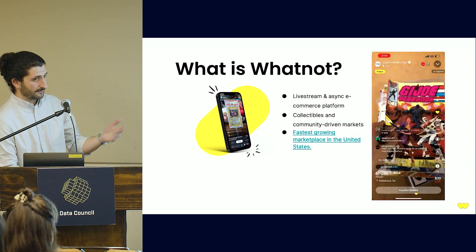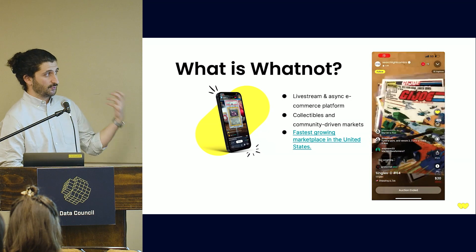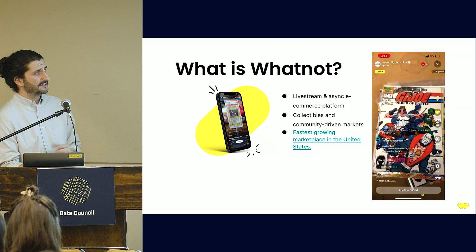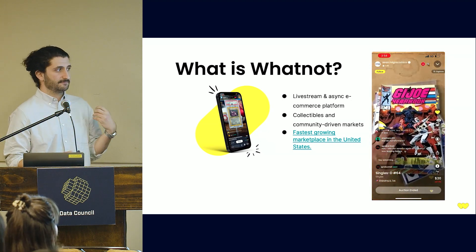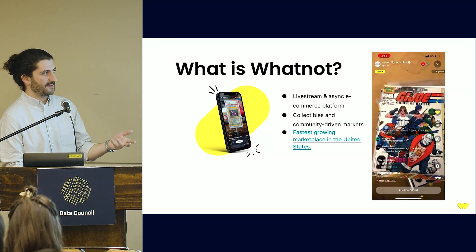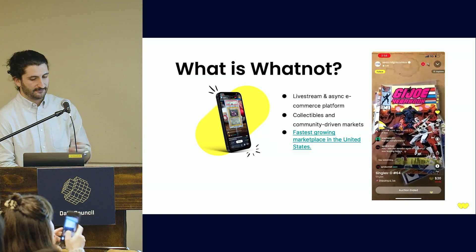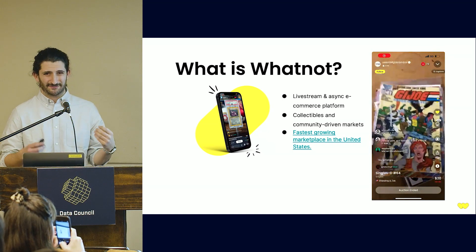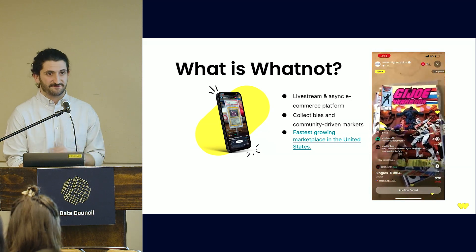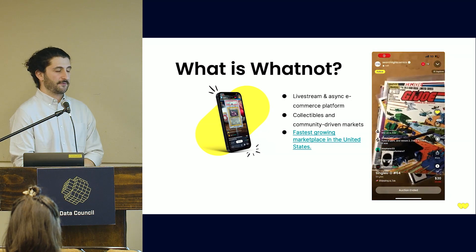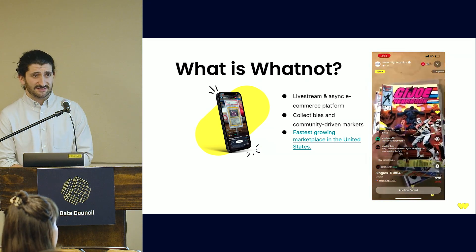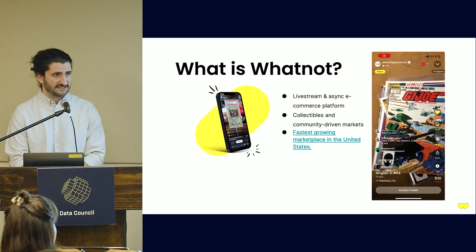The way it works is you download our app, you go join a live stream, there will be a seller who is broadcasting live, and they're selling something. You as a user can buy whatever it is they're selling, usually via an auction. We typically sell in collectible and community-driven marketplaces like sneakers, sports cards, Funko Pops, and comic books. We were named the fastest growing marketplace in the United States for two years in a row.